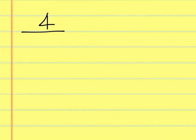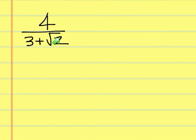We have 4 over 3 plus the square root of 2. We want to simplify this by getting the radical 2 out from under the fraction. But you can't just multiply the top and the bottom by the square root of 2, because if you do that, you're still left with this 3 that's in there. So what you use is called a conjugate.